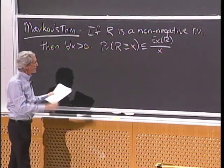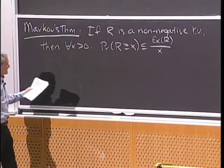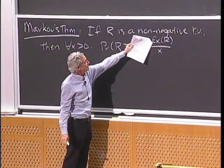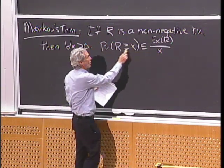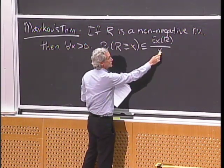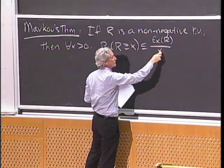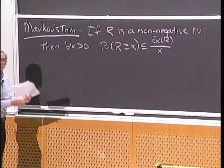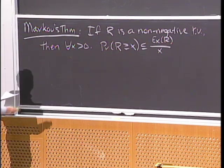In other words, if r is never negative, and say the expected value is small, then the probability r is large will be a small number — a small number over a big number. So it says that you are unlikely to greatly exceed the expected value. Let's prove that.